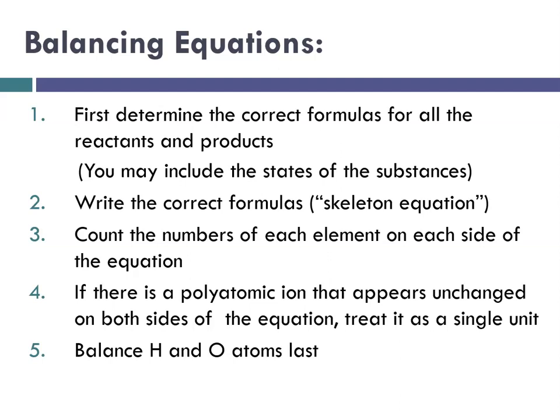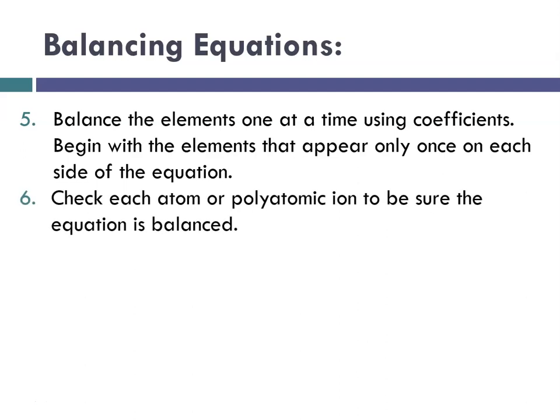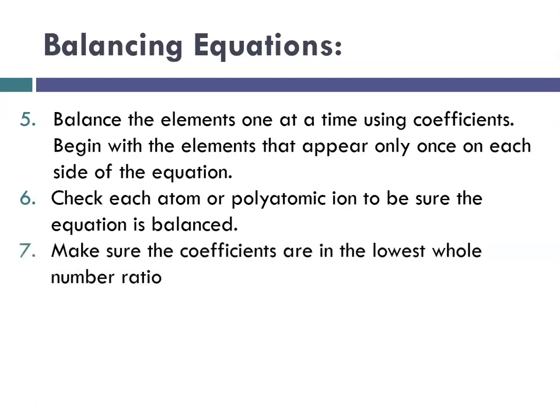And if there happens to be a polyatomic ion that appears unchanged on both sides of the equation, just treat it as if it was a single atom unit. And then the last thing you should do is balance H and O. And we'll do a lot of practice with these. So balancing the elements one at a time using coefficients is what you would do. And what happens here is when you're looking at them, pick the ones that only appear once on each side of the equation and recall what you've learned in math class about least common multiples and common factors and that kind of thing. And then check each atom or polyatomic ion to be sure that everything matches on both sides. So that would indicate it was balanced. And make sure that your coefficients are the lowest whole number ratio. So you don't want like twos all across. You want to make sure that you would reduce that to, for instance, ones all across.